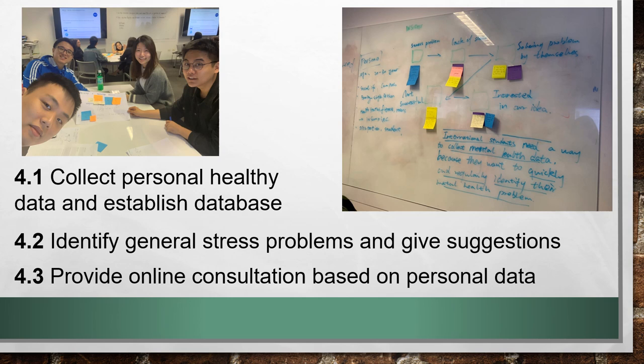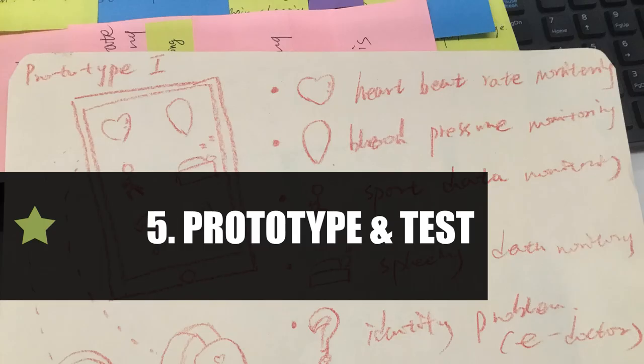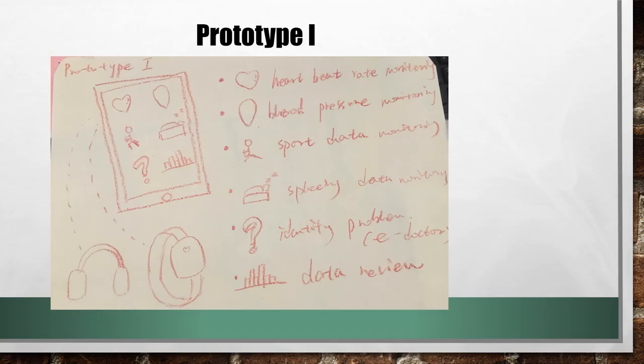The third function is high-level service: the user receives individual psychological advice based on their data and a personal cloud to establish an individualized program. We have designed a set of functional smartwatch and earphone with an intelligent monitoring and analysis application. This solution helps users review health data such as heart rate, sport and sleep data, and blood pressure, identifies stress problems based on the database, and provides a platform for personal online medical consultation.